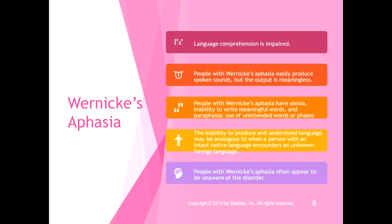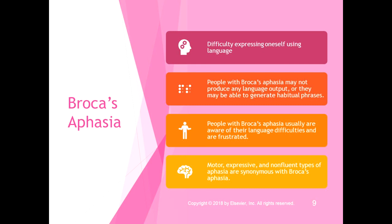People with Wernicke's aphasia often appear unaware of their disorder. There are linked videos in the module showing a person with Wernicke's aphasia being interviewed by a therapist, and one with a person with Broca's aphasia, so you can see the difference. A synonym for Wernicke's aphasia is fluent aphasia, because people can easily produce spoken sounds — the language sounds fluent — but the output is meaningless or disorganized.